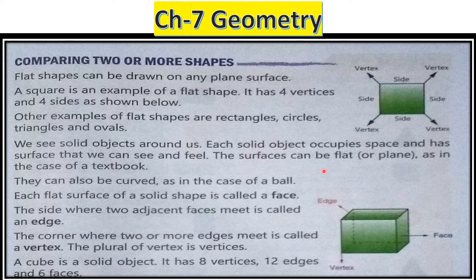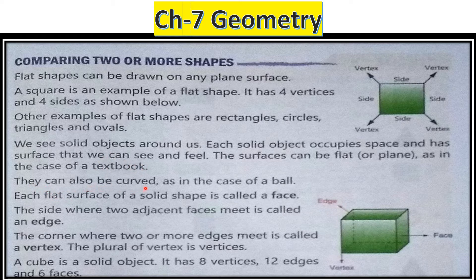Now we see solid objects around us. Each solid object occupies space and has a surface that we can see and feel — like a pencil box, book, or copy. All these are solid shapes in the shape of a cuboid. The surface can be flat or plain, as in the case of a textbook, which is an example of a cuboid.